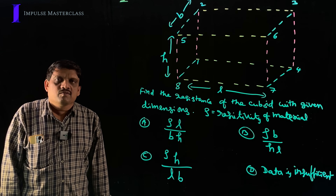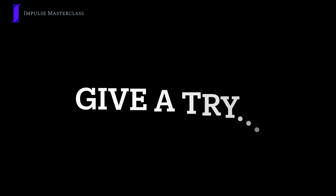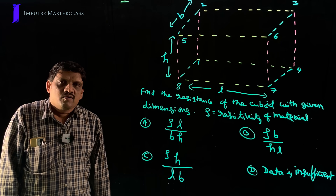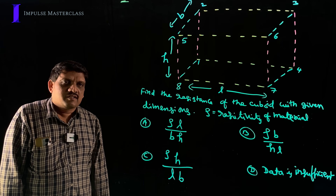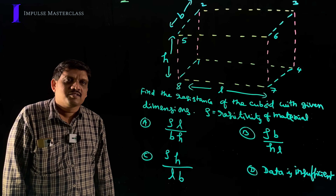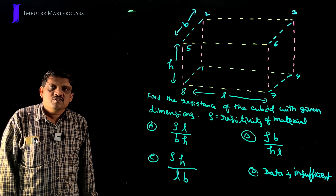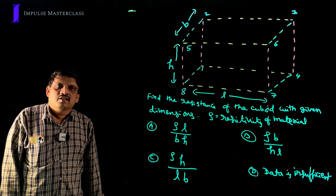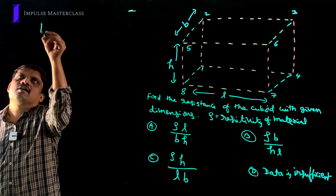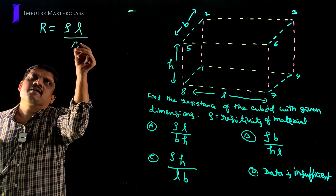All of you try to solve this question seriously for a few minutes. Most of you would have gotten the answer as option A, B, or C. Actually, the correct answer is option D — data is insufficient. Most students answered wrongly because they don't know how to apply the formula R = ρL/A.